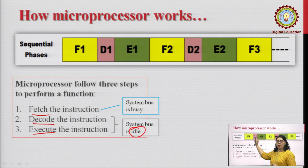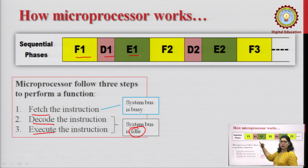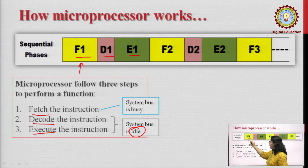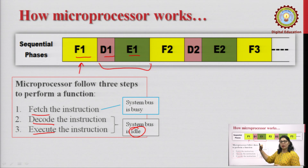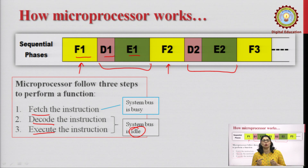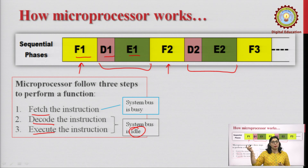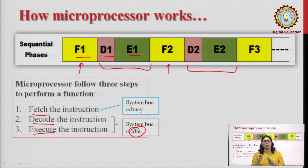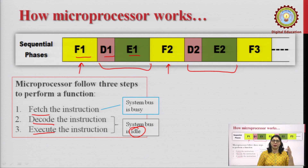You can see in this diagram of sequential phases: we fetch the first instruction, then decode and execute it. The system bus worked during fetch, but was idle during the decode and execute states. Then we fetch the second instruction, and again the bus is idle for the remaining two states. So the system bus is not being fully utilized. This is how 8085 and its predecessors worked, where the idle time of the system bus was quite significant.